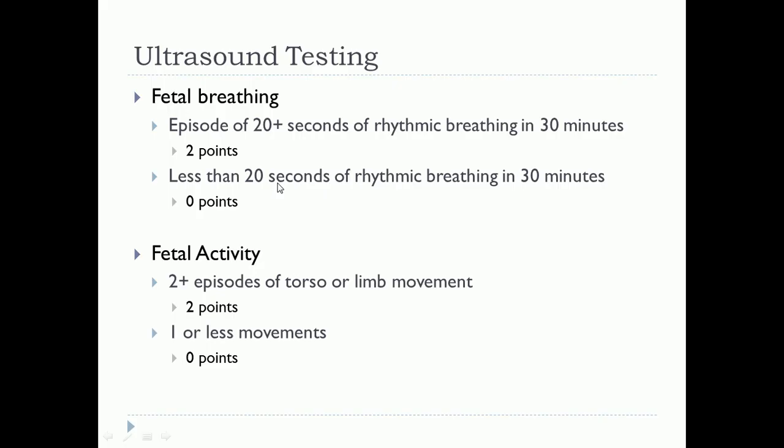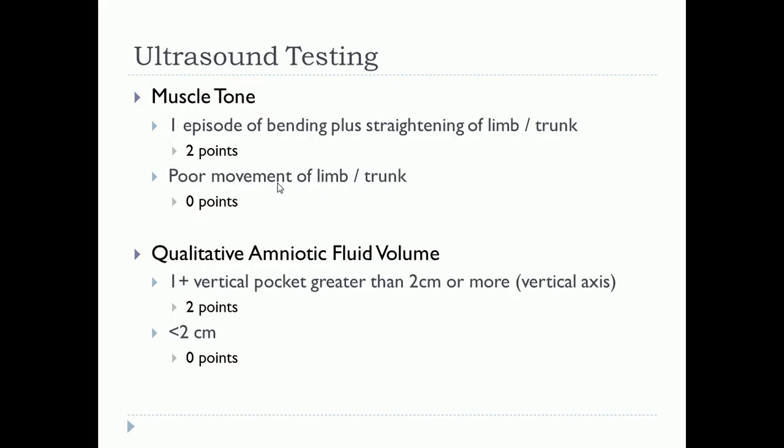The next component is fetal activity — you'll need to see at least two episodes of torso or limb movement. Then there's muscle tone, where you'll need to look for at least one episode of flexion and extension of a limb or trunk. So you need to observe extremity extension and flexion, or truncal flexion and extension — at least one of those to indicate adequate muscle tone.